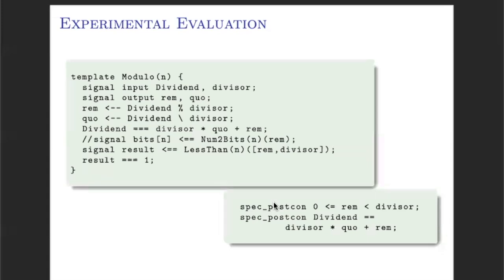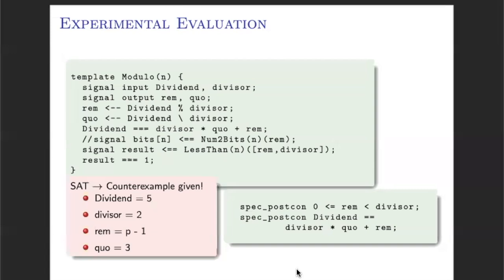This is a simplified version of one of the bugs that we have found in the Dark Forest library. In this case, it is a circuit that models an integer division between two values. It receives as input the dividend and the divisor, and computes the remainder and the quotient of this operation. However, the implementation in the Dark Forest project is buggy. If we check if the circuit satisfies the expected behavior, we observe that it produces a counter-example indicating a possible solution where the circuit is not modeling the expected behavior — in this case, the remainder is taking a negative value, which is not what we expect. In order to solve this issue, the solution is to include the constraints that are currently commented out. Now we are forcing the remainder to be positive, and in this case the circuit, once we add the constraints, can be verified using CYBER.